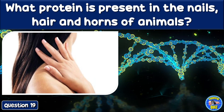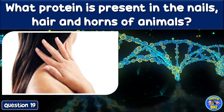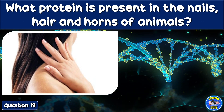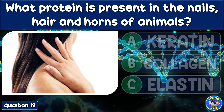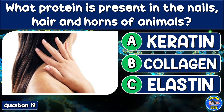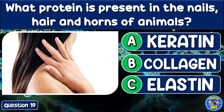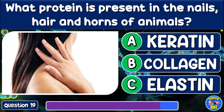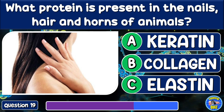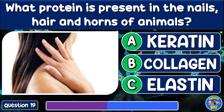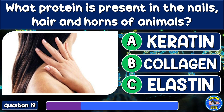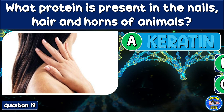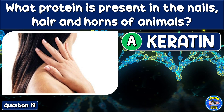What protein is present in the nails, hair, and horns of animals? Keratin, collagen, or elastin? Keratin.